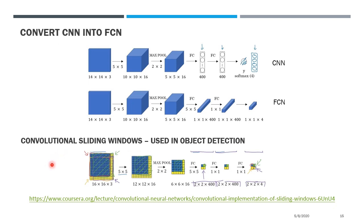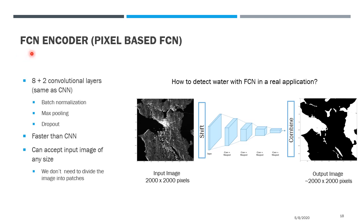If you are interested in more details, you can visit a great video by Andrew Ng. After the conversion, we will call this new network the FCN encoder, or patch-based FCN. This new network shares the same neurons as the CNN. The FCN encoder has two main advantages compared to CNN: first, it is faster because it does not recompute things already computed; second, it can accept input images of any size and we don't need to divide the image into patches. In a real application, you just input the whole image into the FCN network and the output is also the whole image.